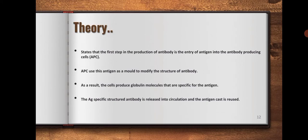The theory states that the first step in the production of antibody is the entry of antigen into the antibody producing cells. Antibody producing cells use this antigen as a mold to modify the structure of antibody.